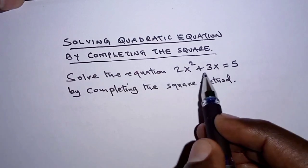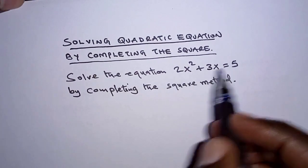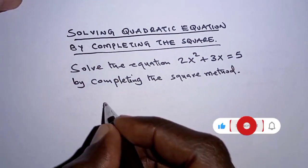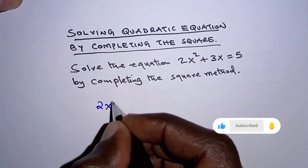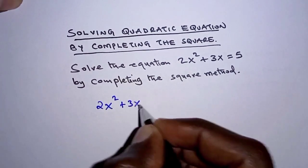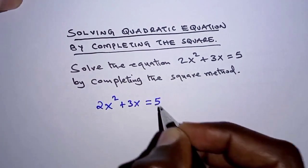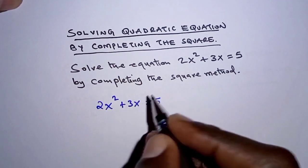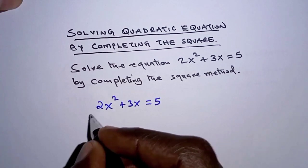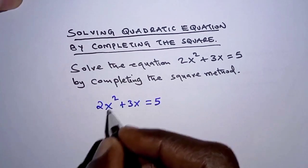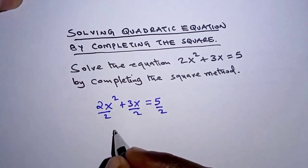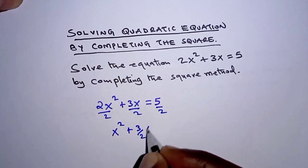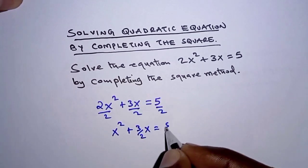Solve the equation 2x squared plus 3x is equal to 5 by the completing the square method. The first thing is to make the coefficient of x squared equal to 1, so we divide all through by 2. That gives us x squared plus 3 over 2x is equal to 5 over 2.